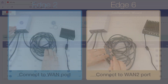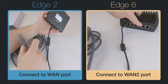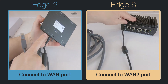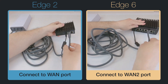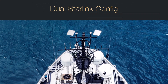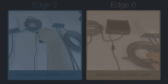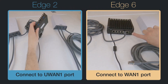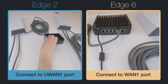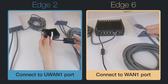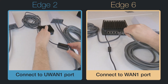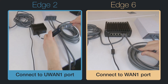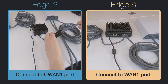Connect your first Starlink to the designated WAN port using the supplied Starlink Ethernet cable. For a dual Starlink configuration, connect your second Starlink to the second designated port on the Edge device. If you have a Combox Edge 2 model, use the supplied adapter to connect to its USB port.